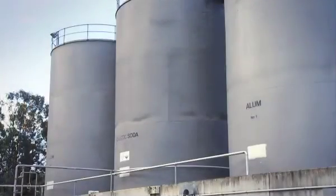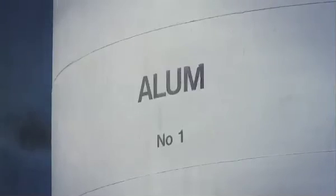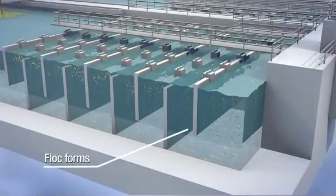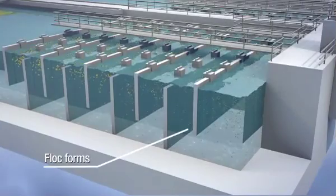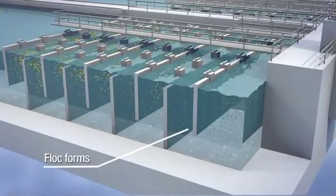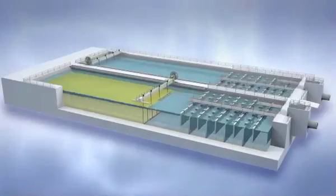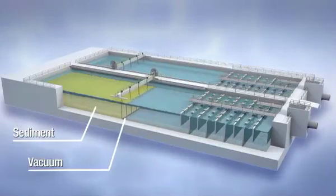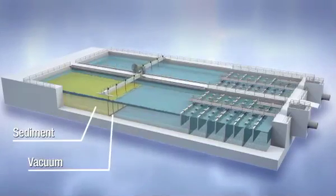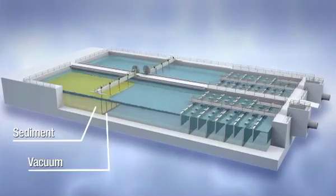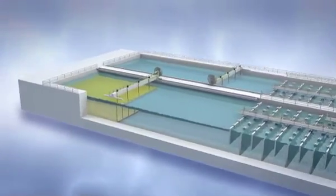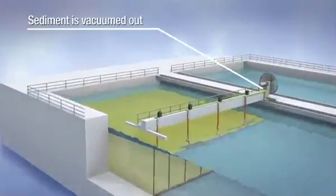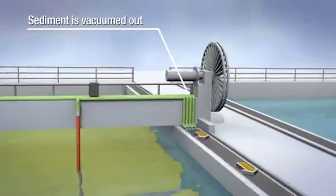A coagulant, called aluminium sulphate, commonly known as alum, is added which causes suspended particles and organic matter in the water to clump together, or flocculate. The clumped particles, or floc, then sink to the bottom of the tank. Once the sedimentation process is complete, the mud residue that has settled is vacuumed out by a hose system that moves up and down the tanks.